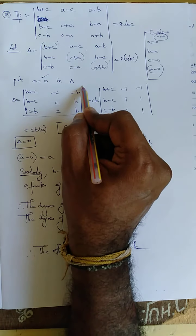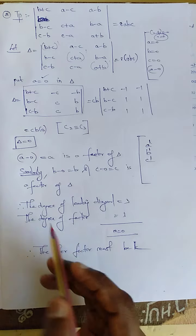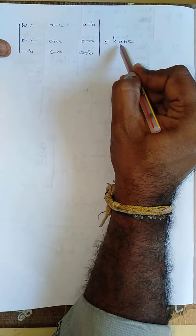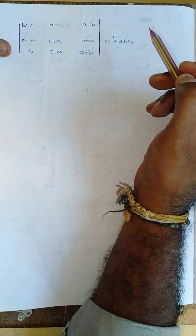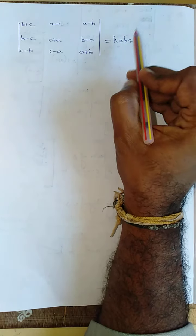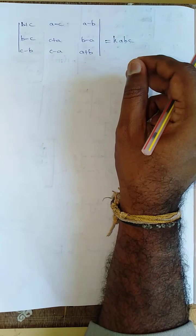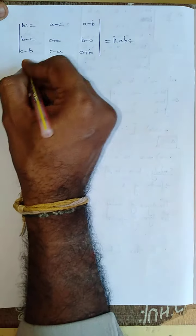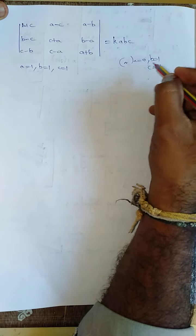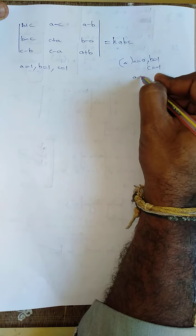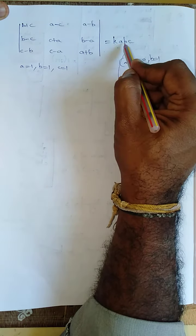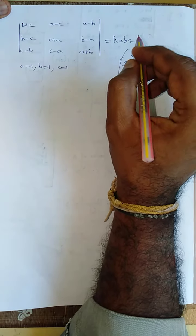So we write the determinant equal to k into a into b into c. We need to find k by applying suitable values — but we cannot apply a=0, b=0, or c=0, because that would make everything 0. Instead, we can apply any non-zero values such as a=1, b=1, c=1, or a=1, b=2, c=3.